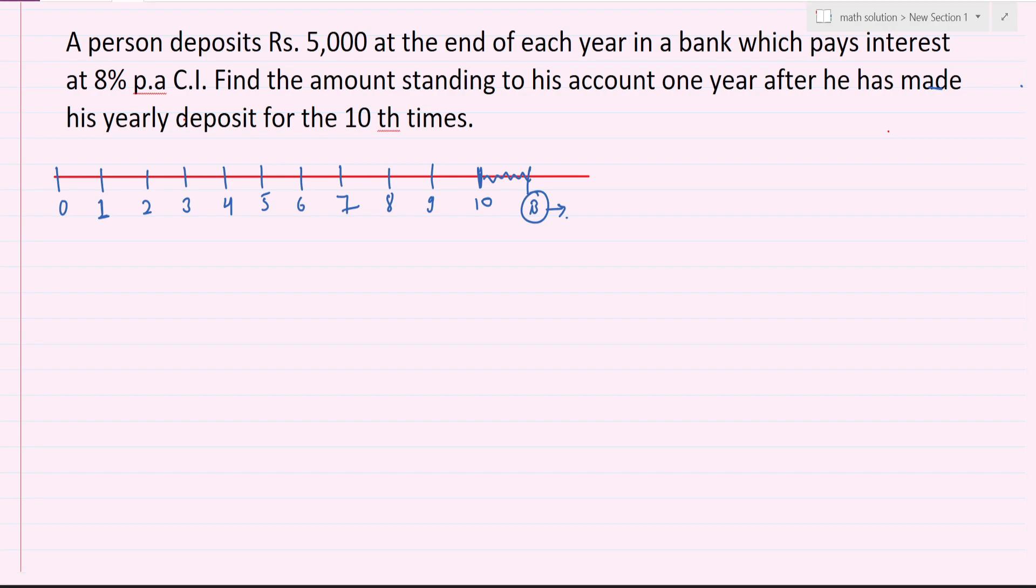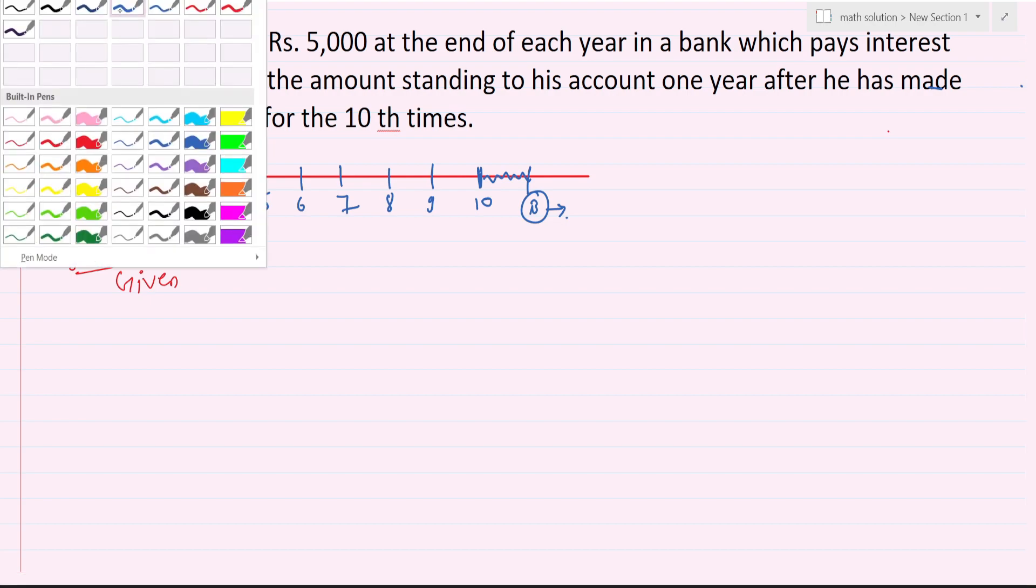Let's go to the solution. This is given because it's a deposit at the end of each year, so the regular annuity formula will apply. The regular annuity formula, so the given values are: